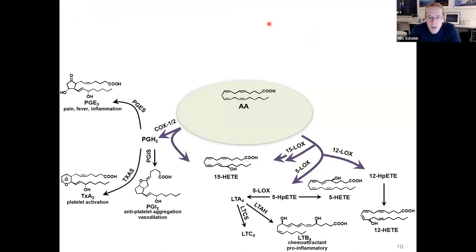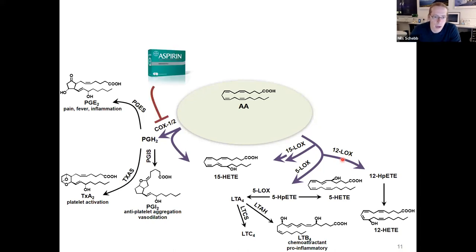There are also other lipoxygenases, for example the 15-lipoxygenase, giving rise to the hydroperoxylated arachidonic acid at position 15, and the 12-lipoxygenase. If we think about the pharmacological importance of these two pathways — for example, aspirin or non-steroidal anti-inflammatory drugs — we really see that this is an important pathway of formation of potent lipid mediators.